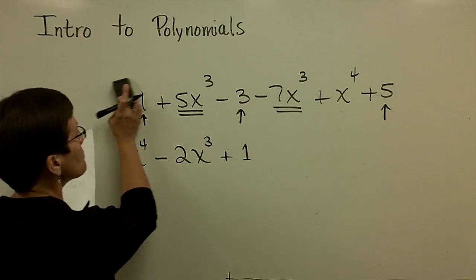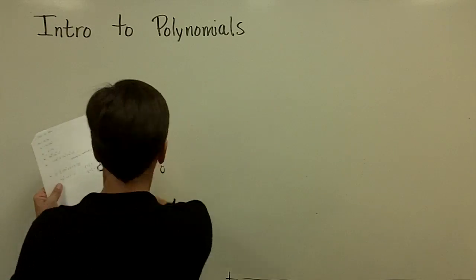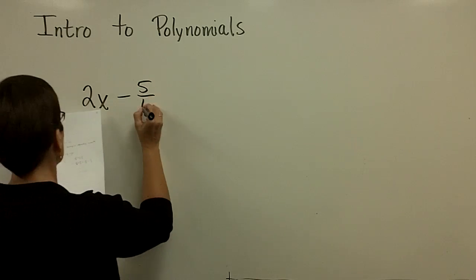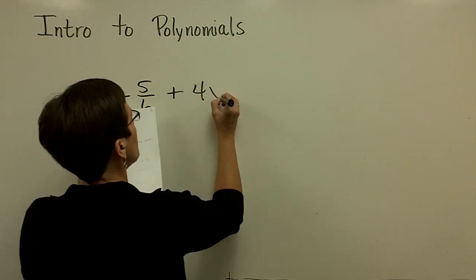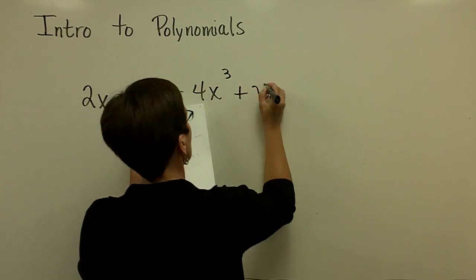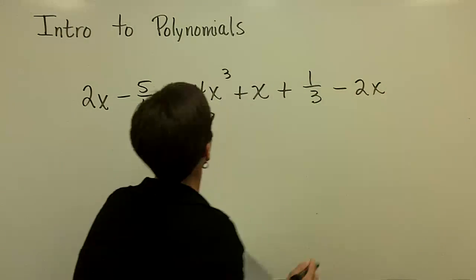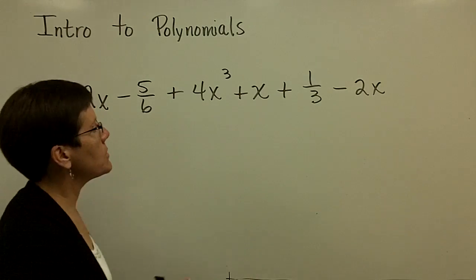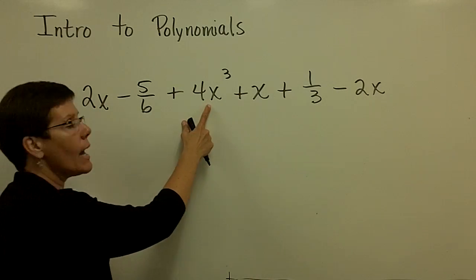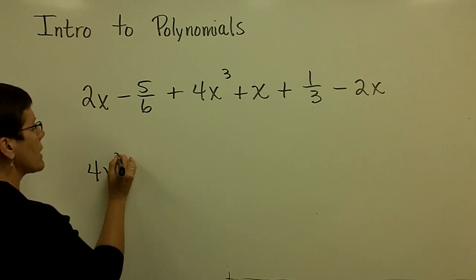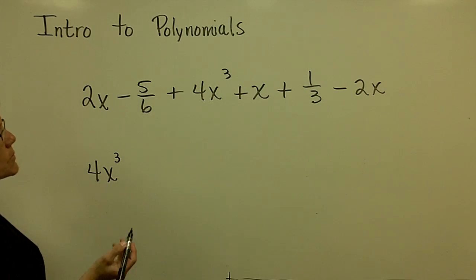Let's take one that involves some fractions. And so I have 2x - 5/6 + 4x³ + x + 1/3 - 2x. And I'd like to collect my like terms. This one is the one with the highest degree. I'm going to put that one down first. So I have 4x³.